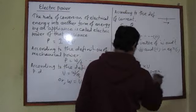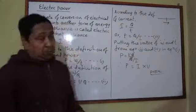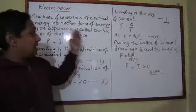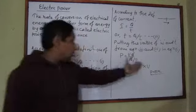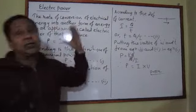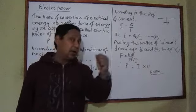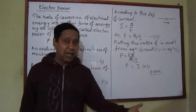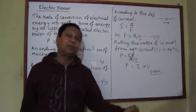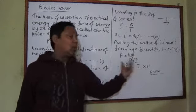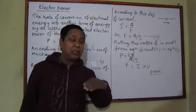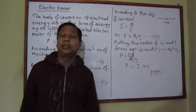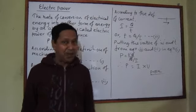This way we can prove that the electric power of an appliance can be calculated using this equation. Electric power means the rate of conversion of electrical energy into another form of energy by an appliance. In one second, how many joules of electrical energy is converted to another form of energy — that represents electric power.